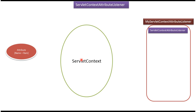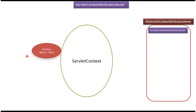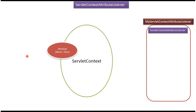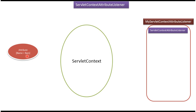Hi, in this video tutorial I will cover surlott-contact-attribute listener introduction. On the left side you can see the attribute name equal to ram. Suppose if you add this attribute in the surlott-contact, or if you remove the attribute from the surlott-contact, or the attribute is replaced with some other value, then that time one event will be created.